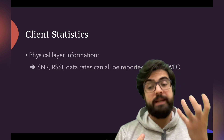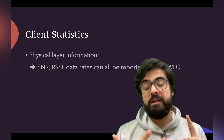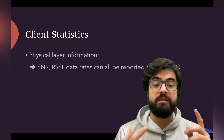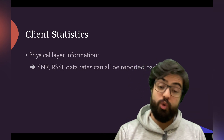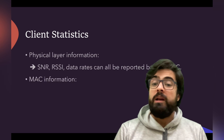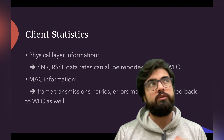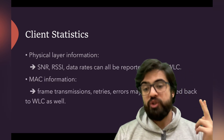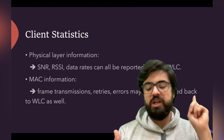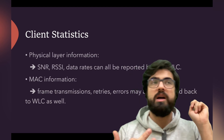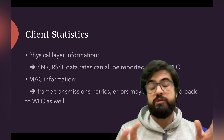Next, we have client statistics. At the physical layer, these include information like SNR, RSSI, signal strength, and data rates — all of which can be reported back to the WLC by the client device. At the MAC sublayer of Layer 2, data such as frame transmission retries and errors can also be reported back to the WLC.